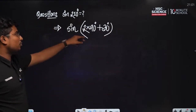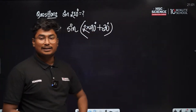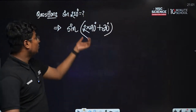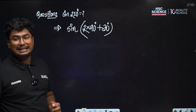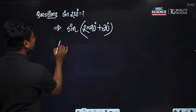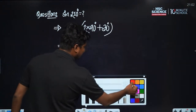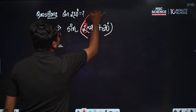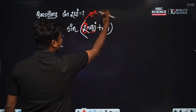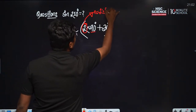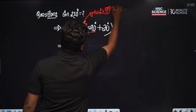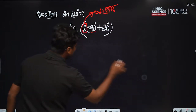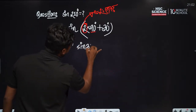So, we have to take 2 into 90 degrees plus 30 degrees. Here, n equals 2. Since n is even, sin ultimately remains sin. So sin(2 × 90° + 30°) becomes sin(30°).